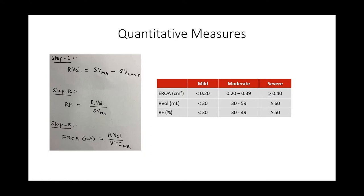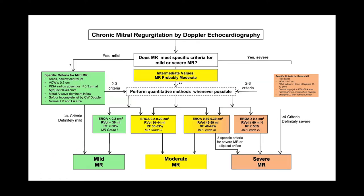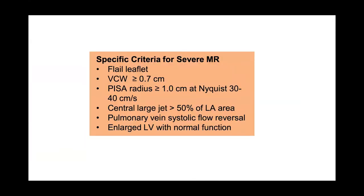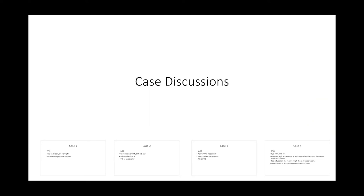These quantitative measurements aren't done routinely due to the many calculations involved and high risk of error, but are useful when parameters disagree. For severe MR: regurgitant volume more than 60 mL, regurgitant fraction more than 50%, and EROA more than 0.4 cm². Per ASE guidelines, specific criteria for severe MR include obvious pathology like a flail leaflet, vena contracta more than 0.7 cm, PISA radius more than 1 cm, regurgitant jet area more than 50% of left atrial area, and systolic flow reversal in pulmonary veins.